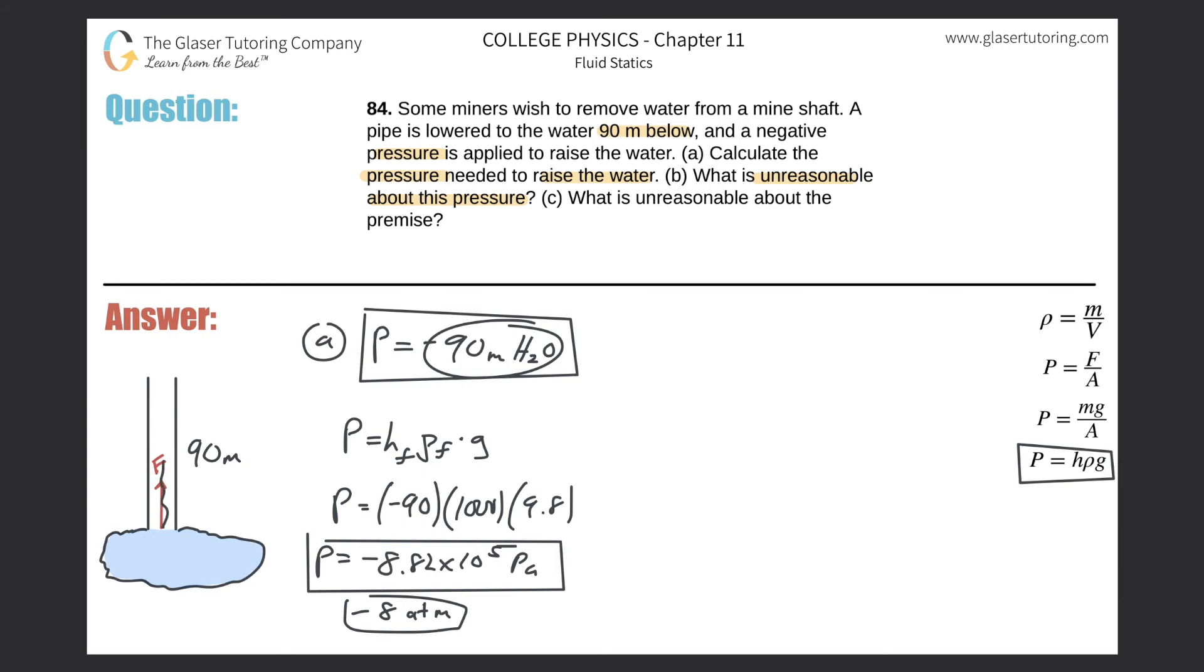It just so happens that this pressure is so low that it will cause the water here that's liquid to turn into a gas and float on up. So you're not going to be pumping out liquid water, you're going to be removing water vapor. And then letter C, what is unreasonable about this premise, I kind of just described it, so that should be good enough.